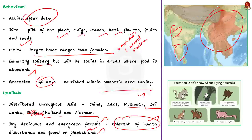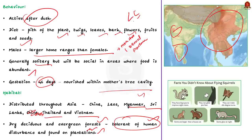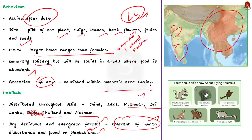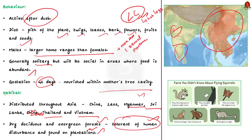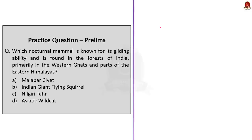These species are listed as Least Concern in the IUCN Red List. But due to habitat loss and continued hunting, in the future these species could face a decline in population. In this discussion, we saw some important points about the Indian giant flying squirrel.